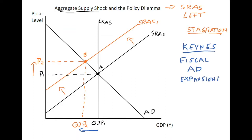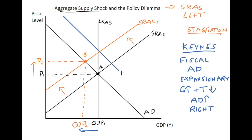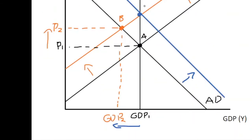For fiscal policy to be expansionary, government spending would increase, maybe combined with a tax reduction. This would cause greater spending in terms of aggregate demand, which would shift the aggregate demand curve rightwards. If it shifts to the right enough — if the discretionary fiscal policy is large enough — what it can do is return the economy to point C, which is at its natural output level.